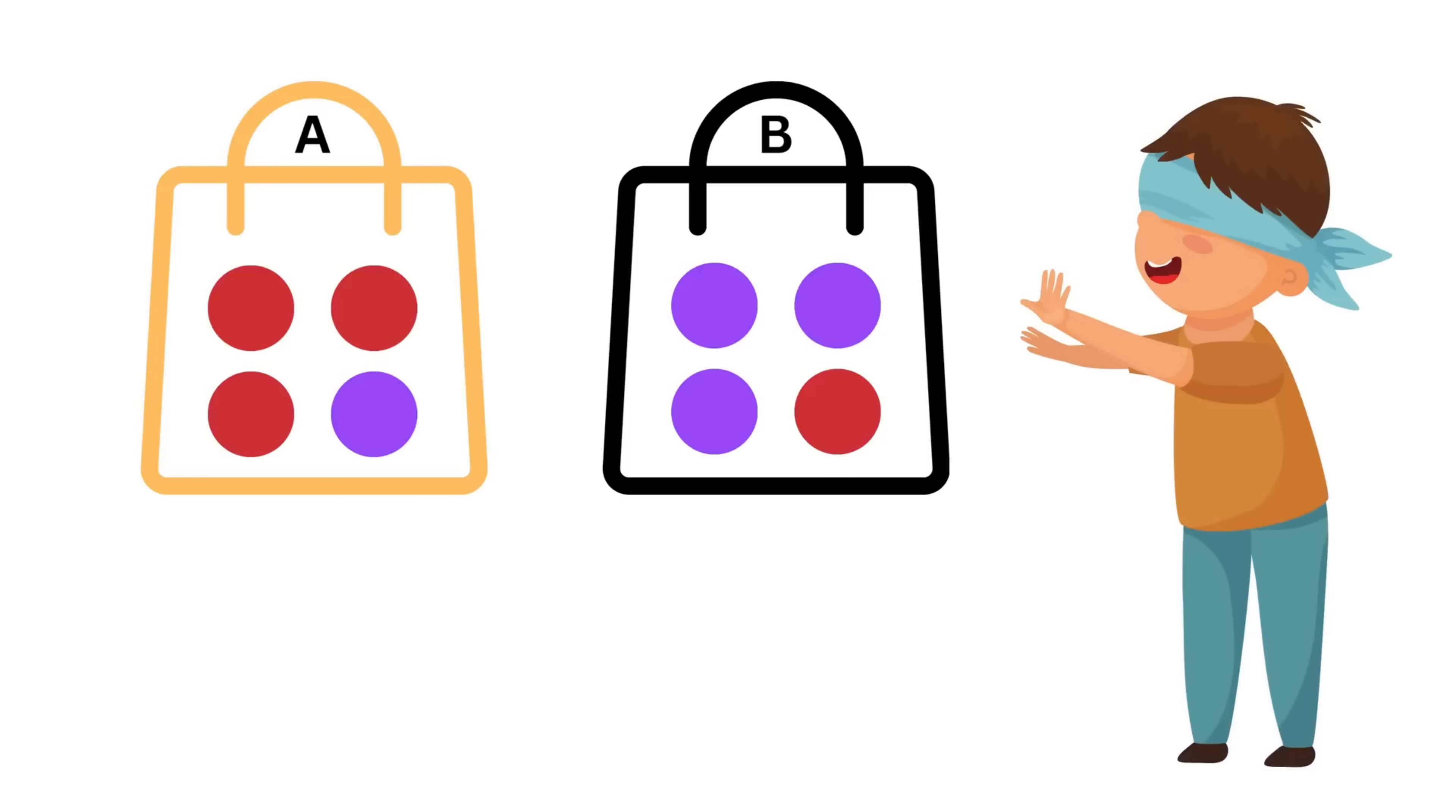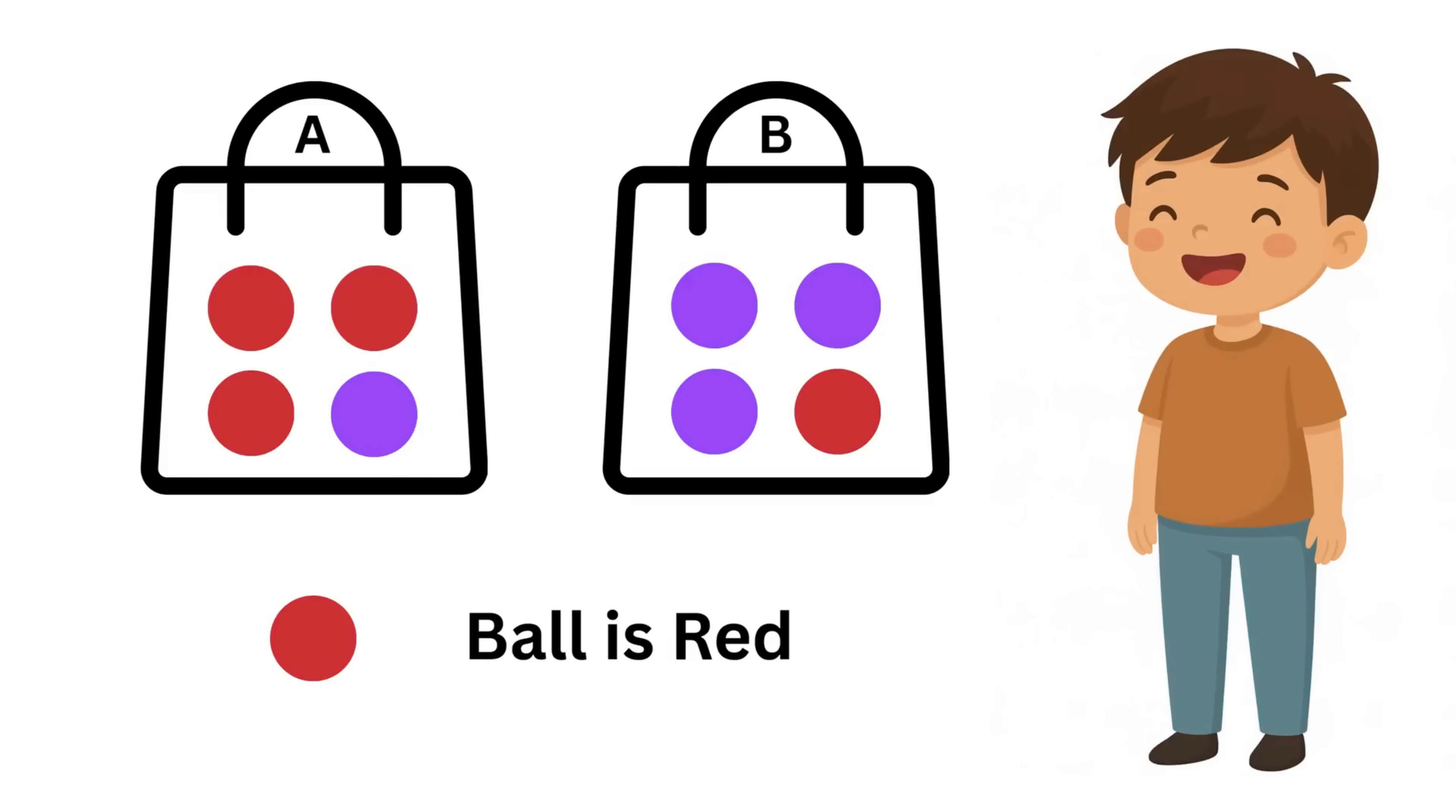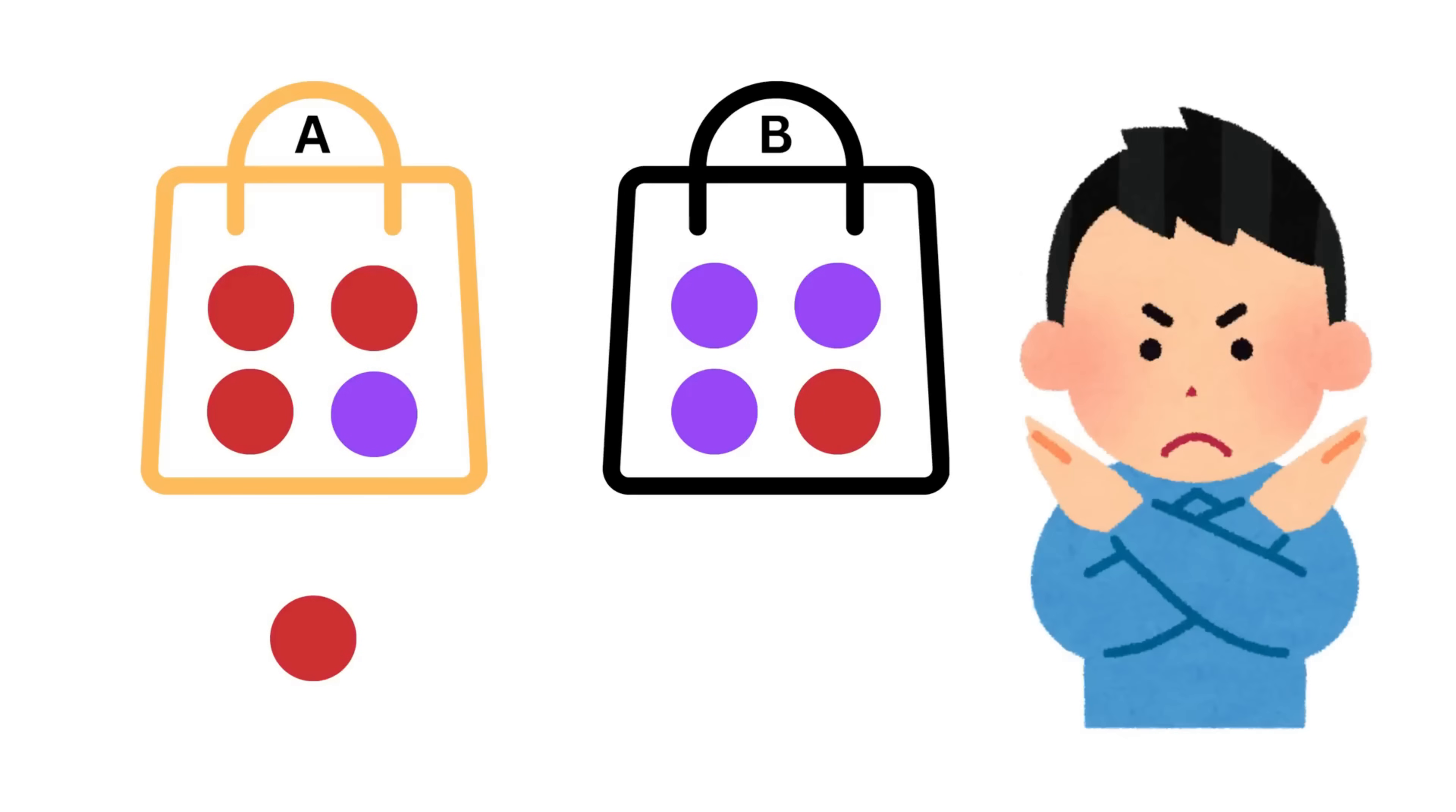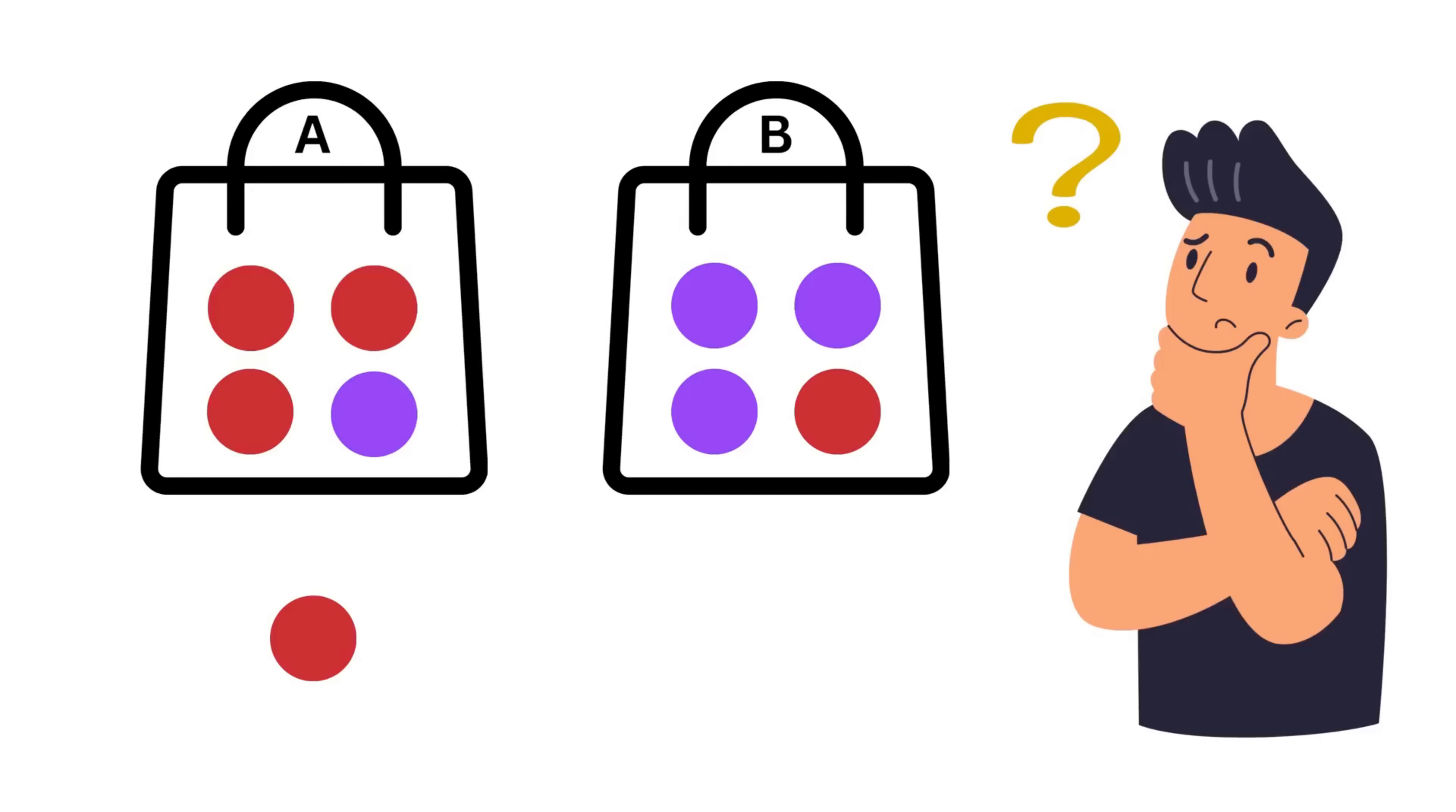Next, from the selected bag, one ball is picked at random and it turns out to be red. You are told this result, that the chosen ball is red, but you still don't know which bag it came from. Now comes the big question. What is the probability that the red ball came from bag A?